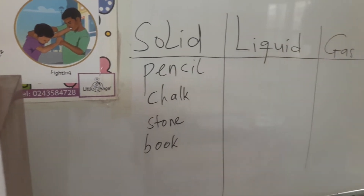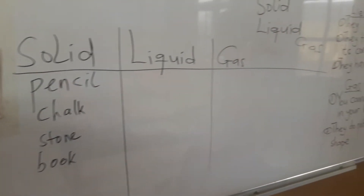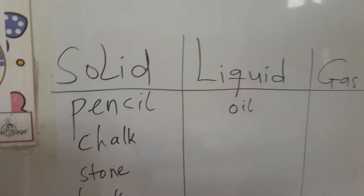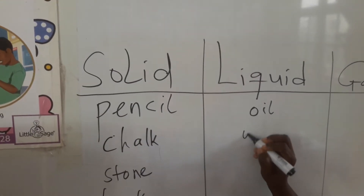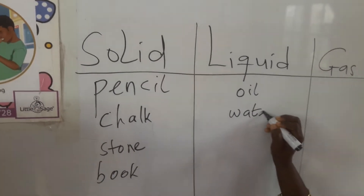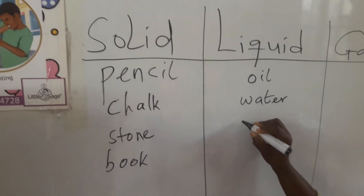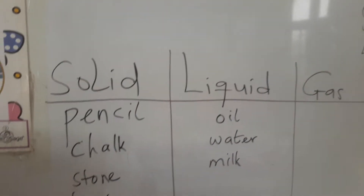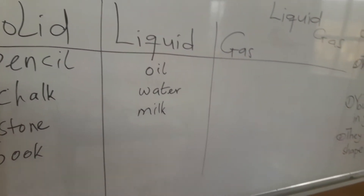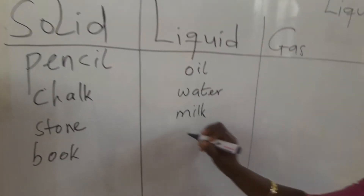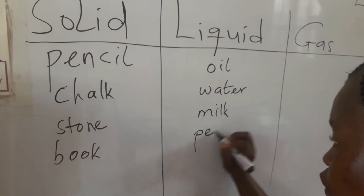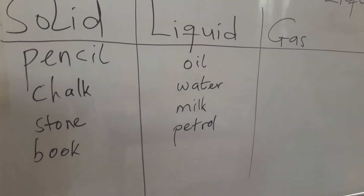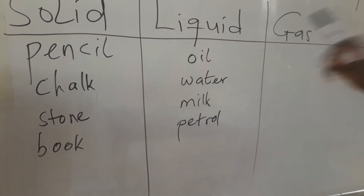With our liquid — what are some of the materials I showed you? I showed you oil. Water. Milk. And we can also get petrol. Someone will say petrol. Good. What about kerosene? Good. Kerosene is also liquid.